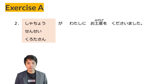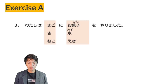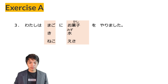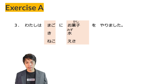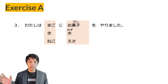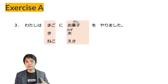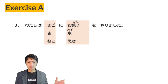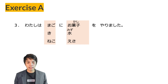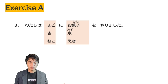Number 2: Shachou ga watashi ni omiyage wo kudasaimashita — the president gave me a souvenir. Instead of kuremashita, this sentence uses kudasaimashita to sound more polite because the giver is a president. Next: Sensei ga watashi ni omiyage wo kudasaimashita — sensei gave me a souvenir. Kuruta-san ga watashi ni omiyage wo kudasaimashita — Mr. Kuruta gave me a souvenir.